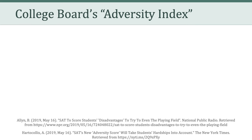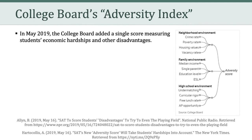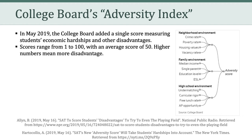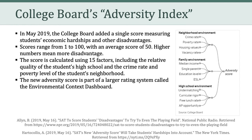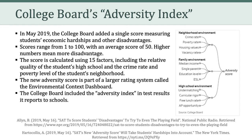Now, I want to talk a little bit about the College Board's Adversity Index. In May 2019, the College Board added a single score measuring students' economic hardships and other disadvantages. A student's adversity score could range from 1 to 100 with an average score of 50. Higher numbers mean more disadvantage, and lower numbers mean less disadvantage. The score is calculated using 15 factors, roughly broken down into factors related to neighborhood environment, family environment, and high school environment. The new adversity score was part of a larger rating system called the Environmental Context Dashboard, and the College Board included this Adversity Index score with test results in the reports it sends to schools. Interestingly, the College Board announced that students — the test takers — would not receive their Adversity Index score.